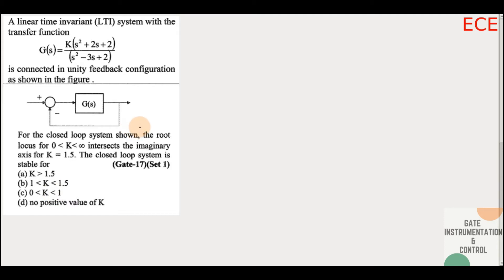Originally the question is about root locus, but what is asked here is the stability of the closed loop system. So we don't need to use the root locus method. We have the Routh-Hurwitz stability criterion, from which we can find the stability — i.e., for which values of k our system will be stable. So we don't need to do the extra work of finding the root locus.